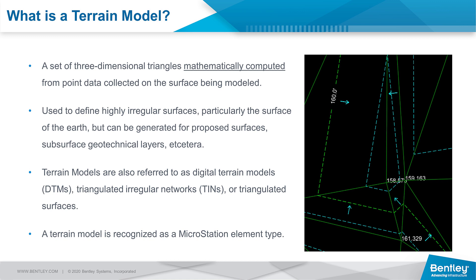The more points you have, the more triangles, the more undulations, and the closer to reality — as far as a surface is concerned — you're going to get. So it's usually used to define many irregular surfaces, things like ground, the earth. But we can also do subsurface geotechnical layers, and we can also capture proposed surfaces in our design. So just a lot of various use cases for terrain — it doesn't just stop at survey delivering an existing ground surface. It's certainly used in each stage and in many different ways. We encourage you to start getting comfortable with the term terrain model, as that is the merger of all those ideas — DTMs, TINs, triangulated surfaces — into one solution.